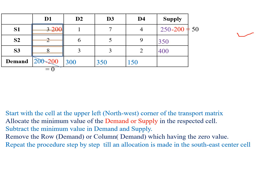Next, we repeat the same procedure. The new upper-left corner cell is S1 row and D2 column, with cost value 1. The supply is 50 and demand is 300. The minimum value is 50. We allocate 50 in that cell. Then subtract: 50 minus 50 equals 0 for supply, and 300 minus 50 equals 250 for demand. S1 row has zero value, so we remove the S1 row.